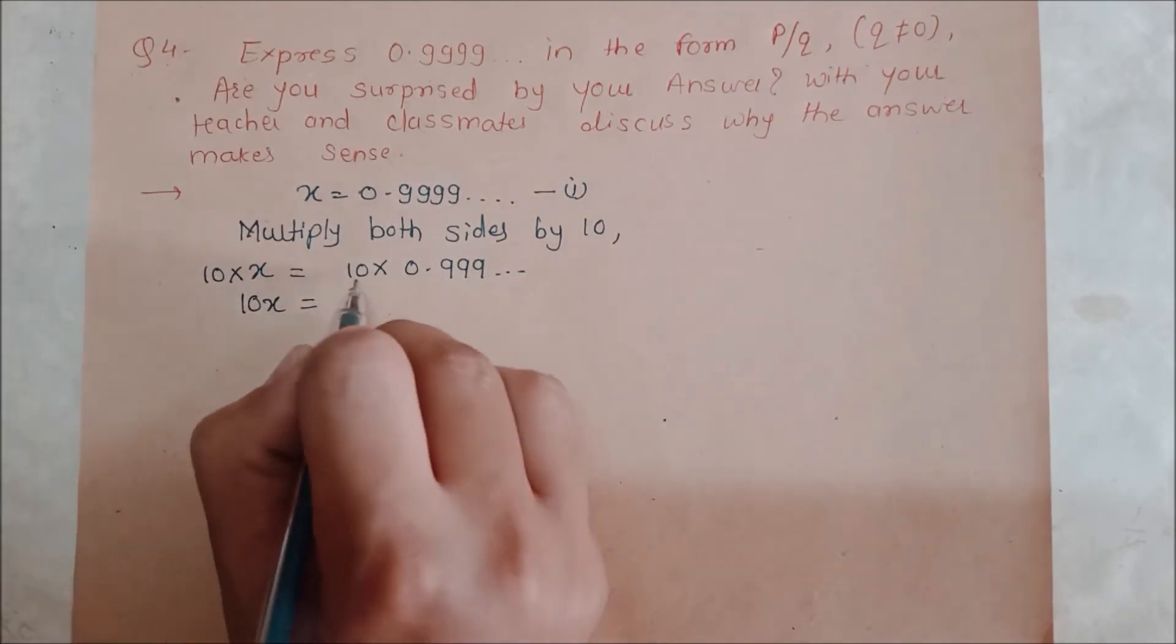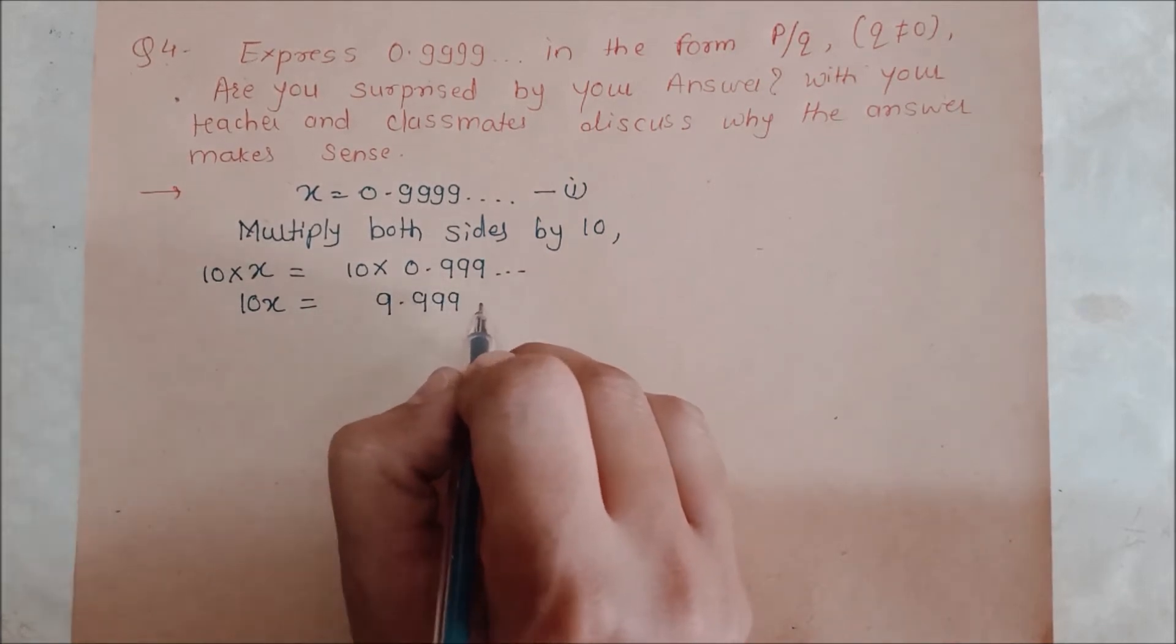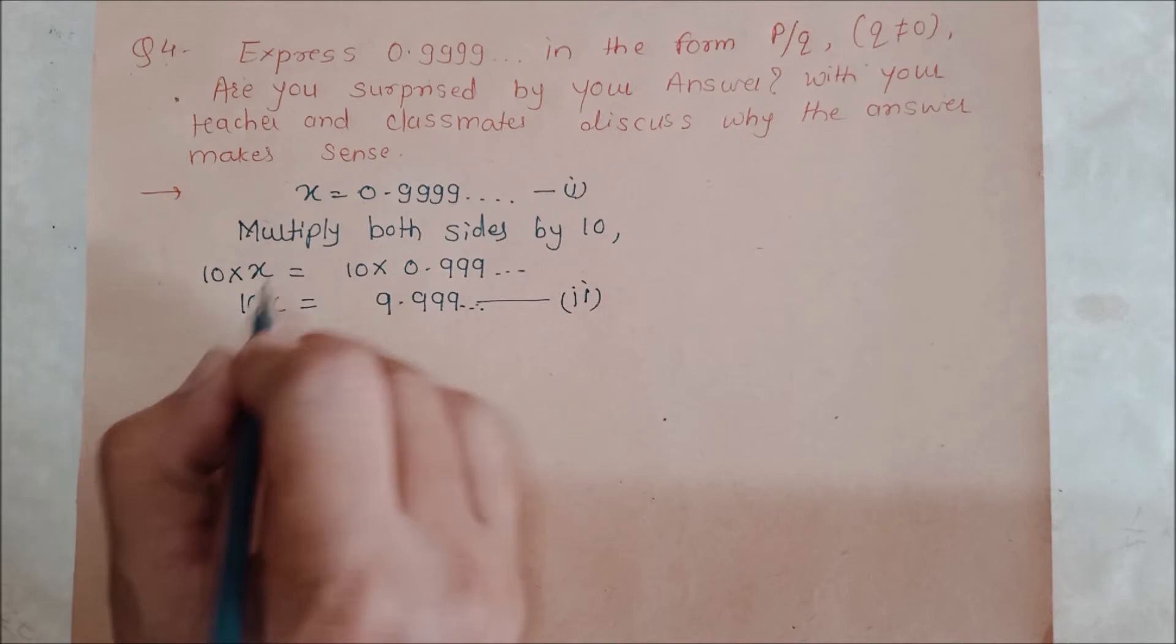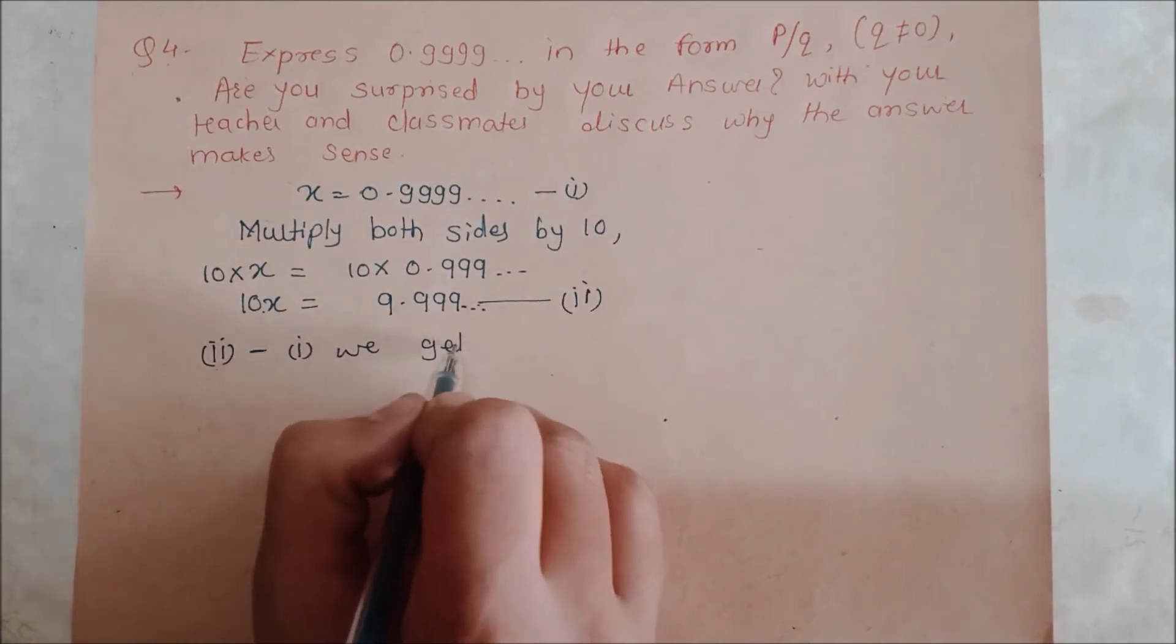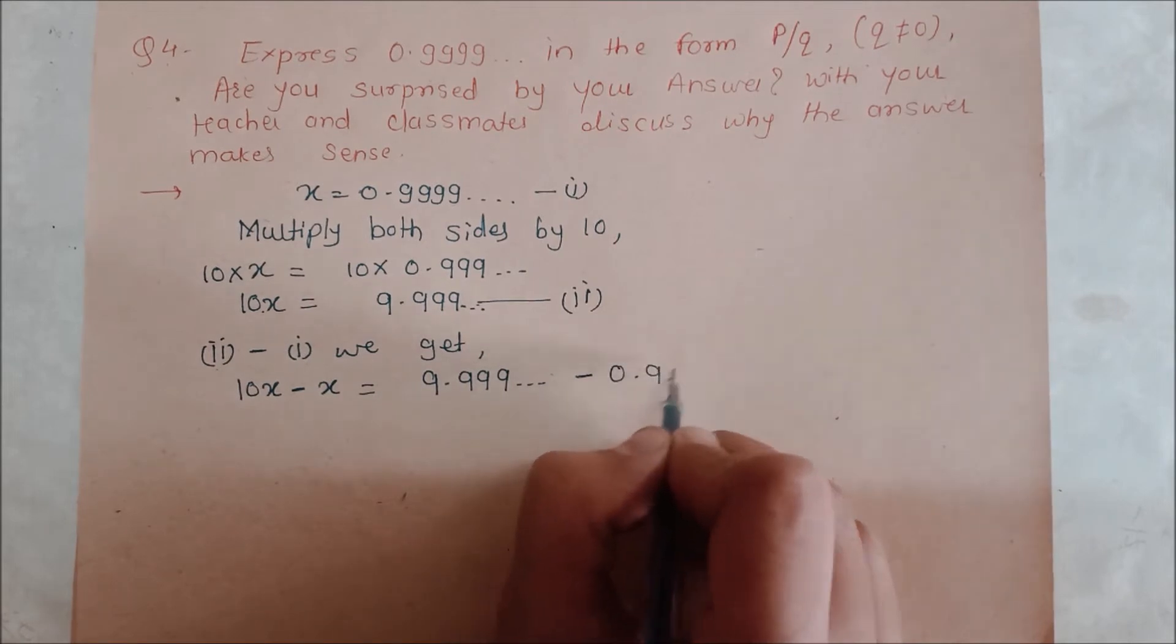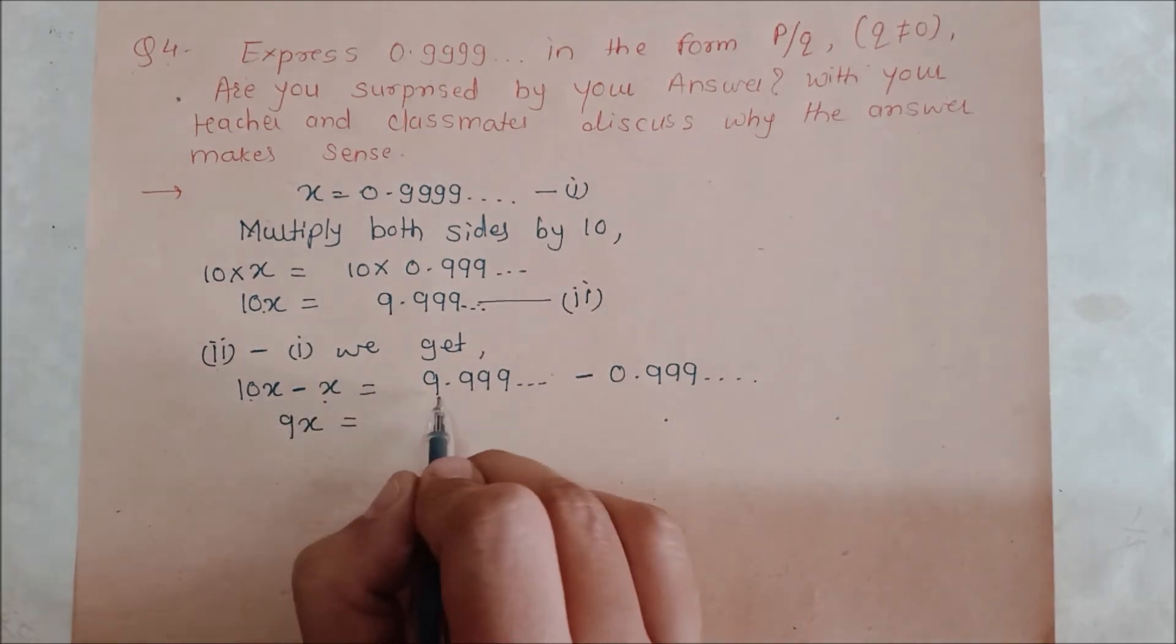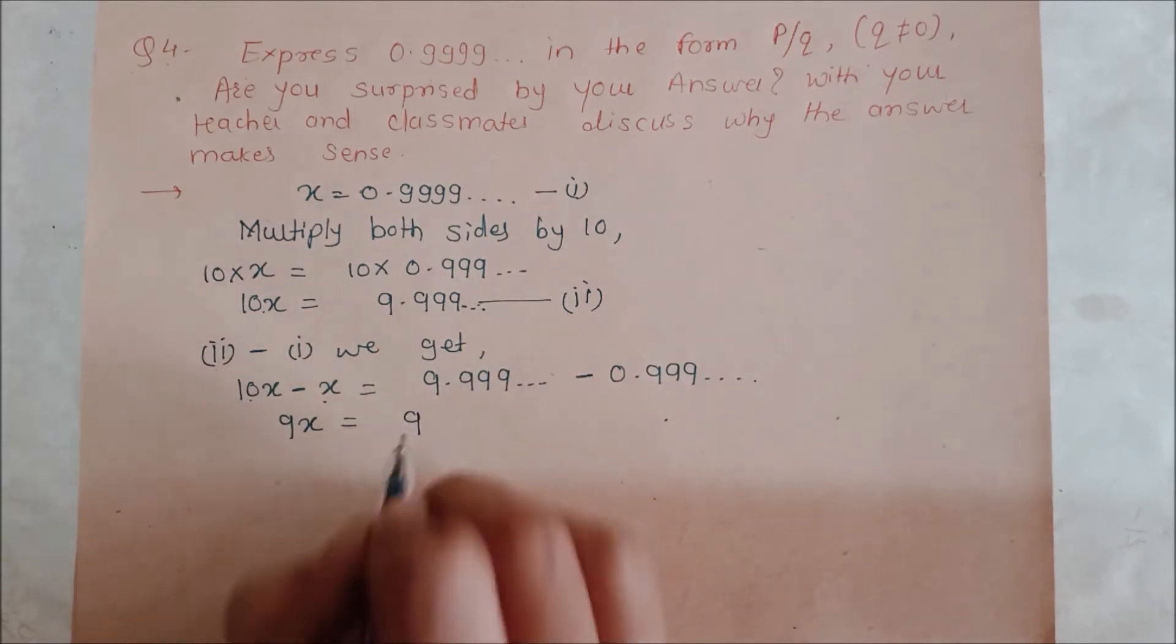That means 10x is equal to 9.9999... Then we will subtract equation (i) from (ii). 10x minus x equals 9.9999... minus 0.9999... So 9x equals 9. And then 9.99 minus 0.99, all the numbers before the dot are the same so it will go out as well, all zeros. And 9 minus 0 is just 9.